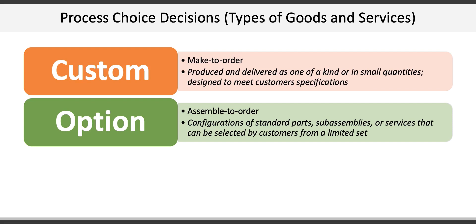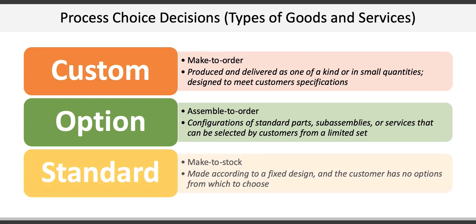The last type of good or service is a standard or make-to-stock good or service that are made according to a fixed design and the customer has no options from which to choose. Most Ikea products would fall into this category and so would an immediate possession spec home. Airline service would also be an example.